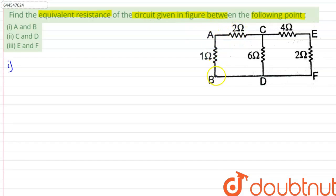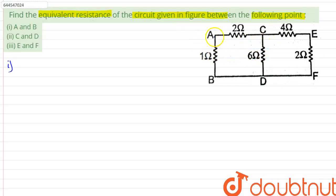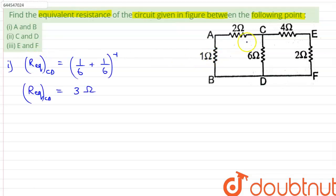As we can see, between point A and point B, these two resistances are in series and they are in parallel with the resistance CD. That equivalent resistance is then in series with this two-ohm resistance, and then they are in parallel with the one-ohm resistance.